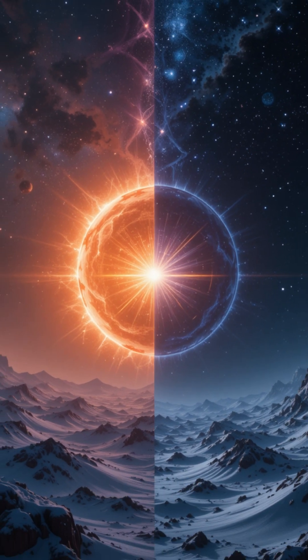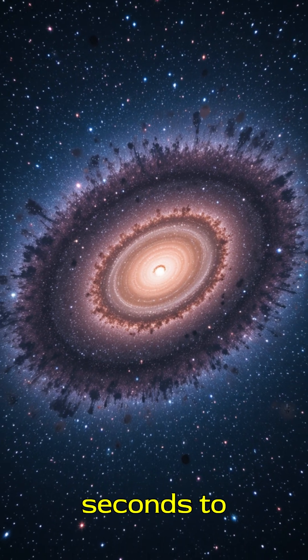6. Light Travel - Light from the sun takes about 8 minutes and 20 seconds to reach Earth.